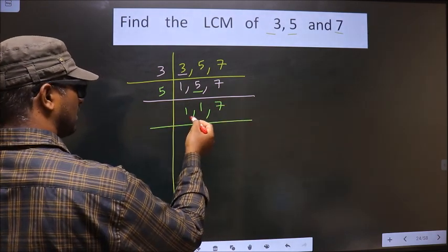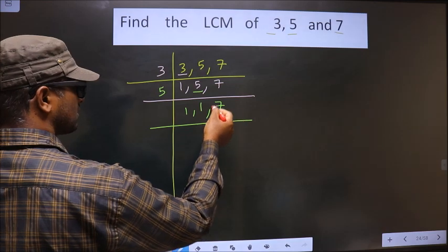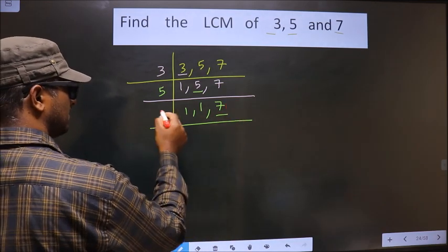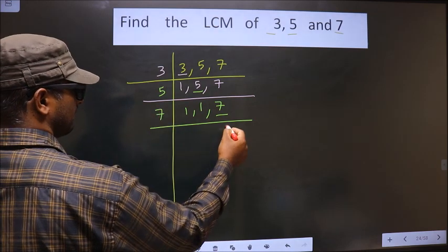Now, here we got 1, here we got 1, so focus on the next number, that is 7. 7 is a prime number, so we take 7. 7 once 7.